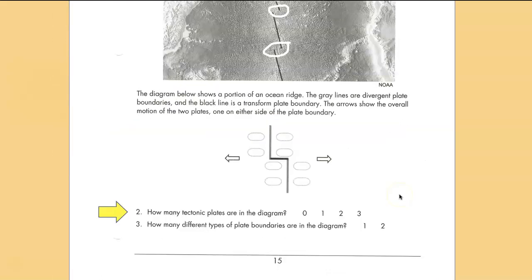How many plates are in the diagram above? Well, we've got one on the left, one on the right, so we've got two plates. How many different types of plate boundaries are in the diagram? We've got the lighter shading, which is divergent, so that's one type, and then we've got a transform between them, so that's a second type. So we have two types of plate boundaries in the diagram.